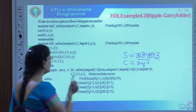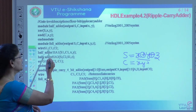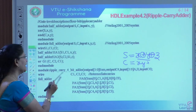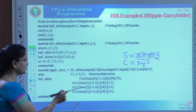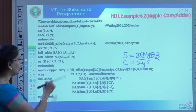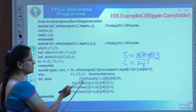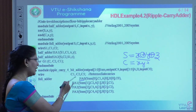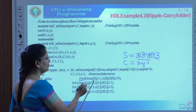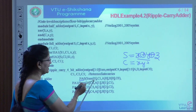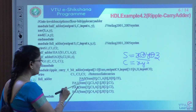We are writing the full adder instances. For the first bit, I am representing the instance as FA0. Then I call sum of the first bit — taking sum[0], C1, A[0], B[0], and C0. Same thing, I need to apply for the next bit. FA1 handles sum[1] — carry changes from C1 to C2, and A and B indices change to 1 as well.